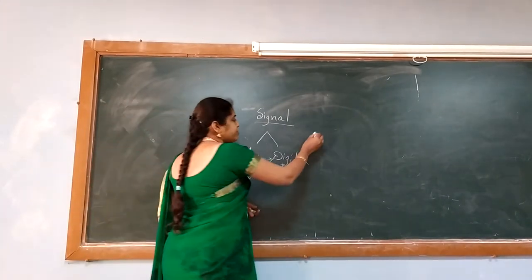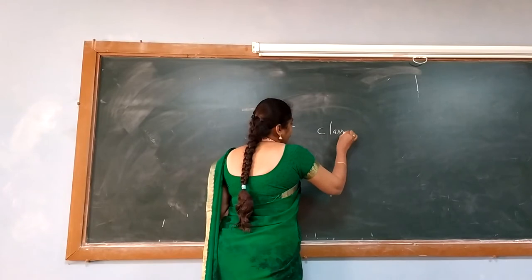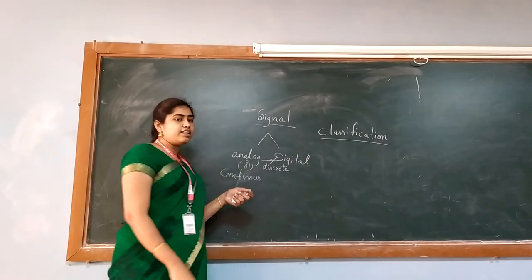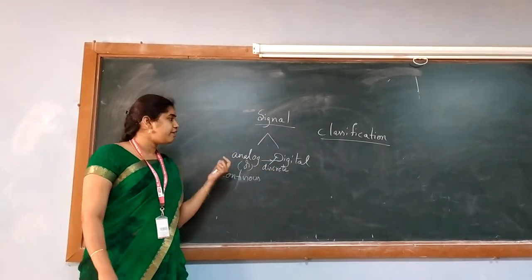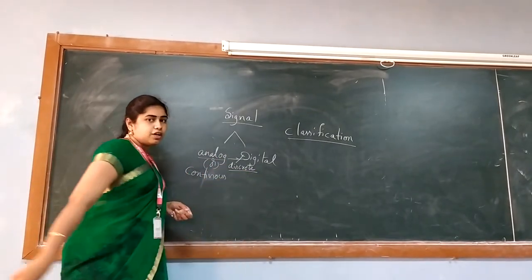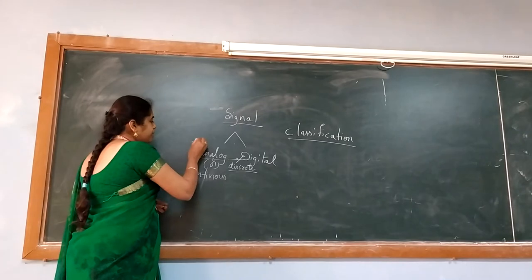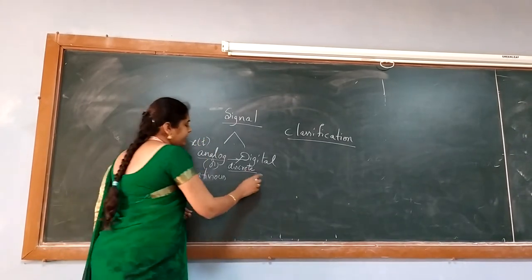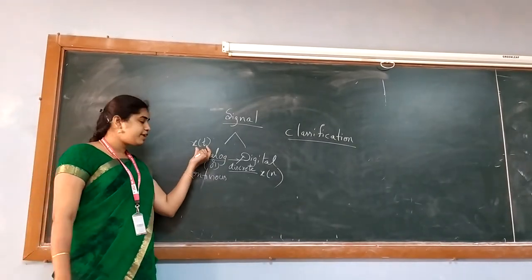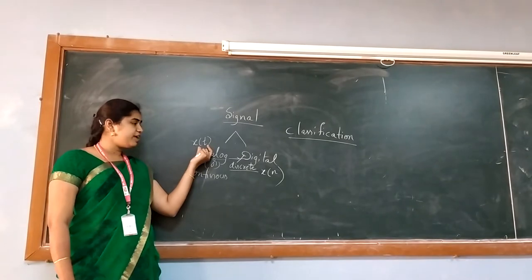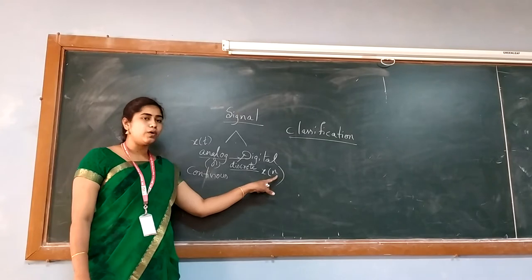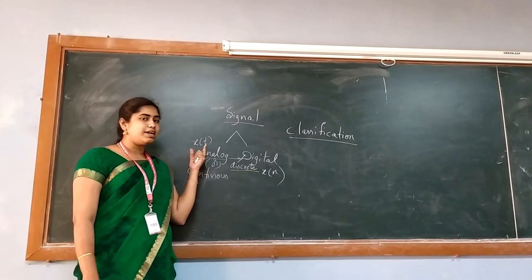Apart from these two, we have the classification of signals. In our subject signals and systems, we are mainly concentrating on analog part and discrete part. Any analog signal can be represented with X of T function and any discrete signal will be represented with X of N. Here, T indicates the signal is varying with respect to time, and N means number of samples. T means time period.